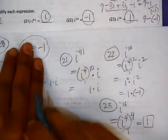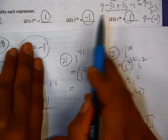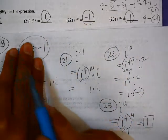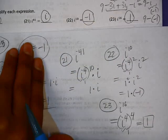When you do these problems, there are only four possible answers: 1, negative 1, i, or the fourth possibility would be negative i.